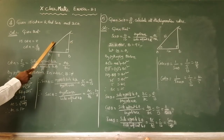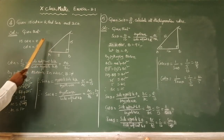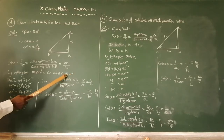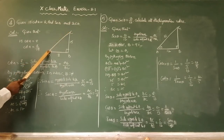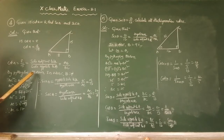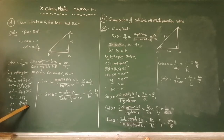We don't know the hypotenuse — the 90 degrees opposite side is called the hypotenuse. We have to find it using Pythagoras: AC squared equals AB squared plus BC squared. AC squared equals 8 squared plus 15 squared, which is 64 plus 225 equals 289. So AC squared equals 289, and AC equals square root of 289, which is 17.